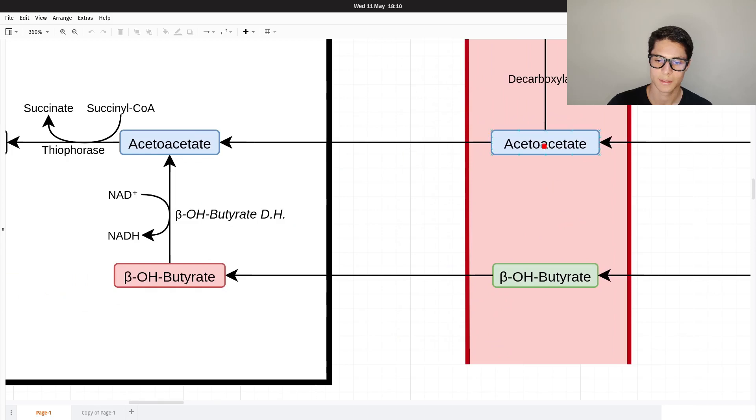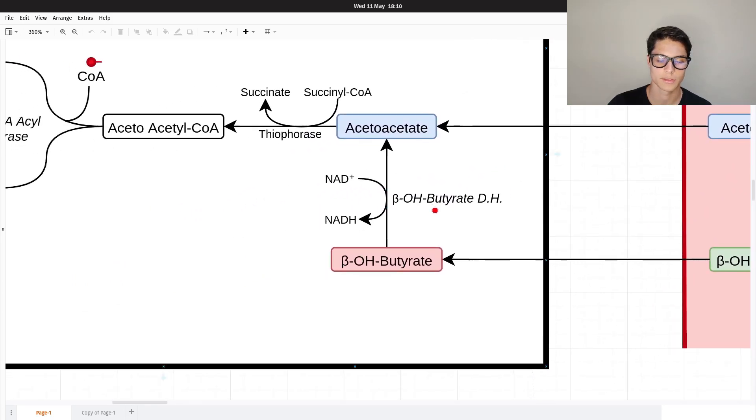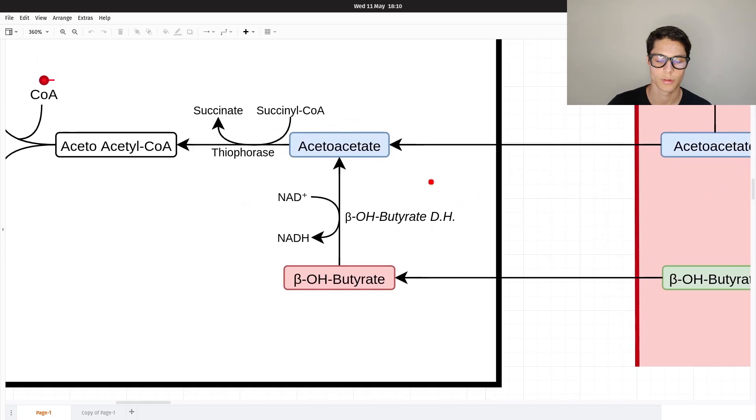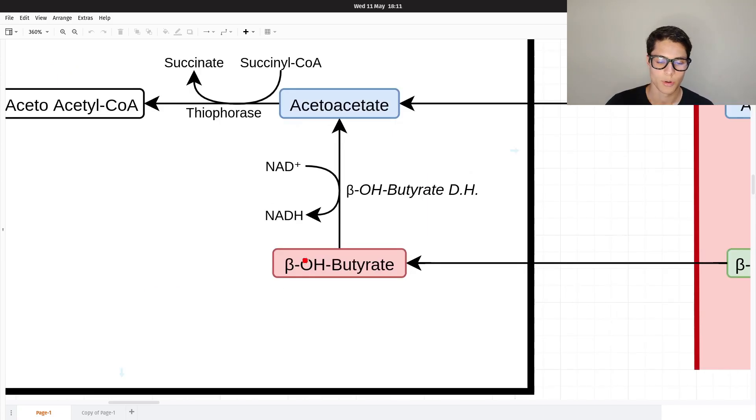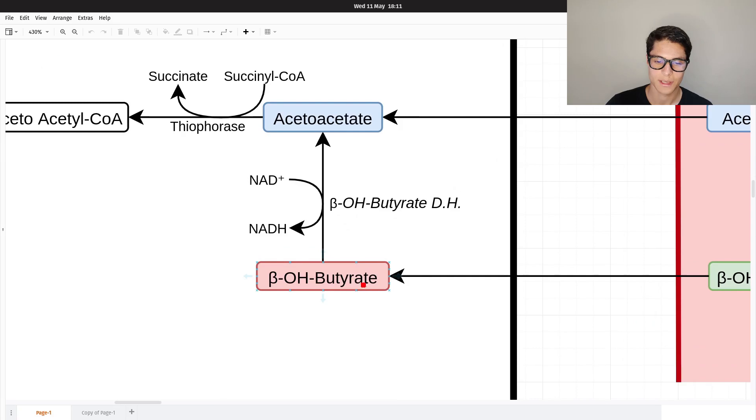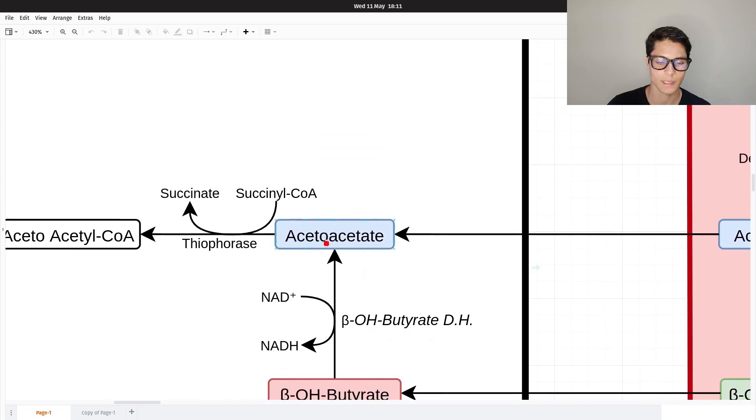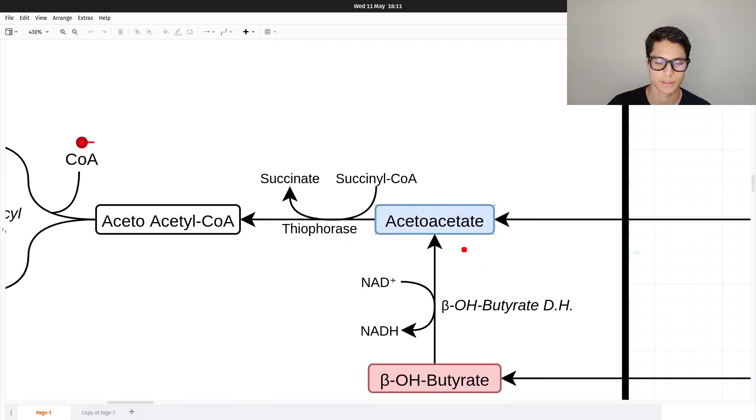Then the ketone groups get inside a cell and they're going to get used for energy. Beta-hydroxybutyrate gets converted back into acetoacetate using the same enzyme we used before. In this case, it's the reverse: NAD+ to NADH. Here, acetoacetate gets converted back into acetoacetyl-CoA. We are going to use succinyl-CoA and create succinate, using a transferase for that.